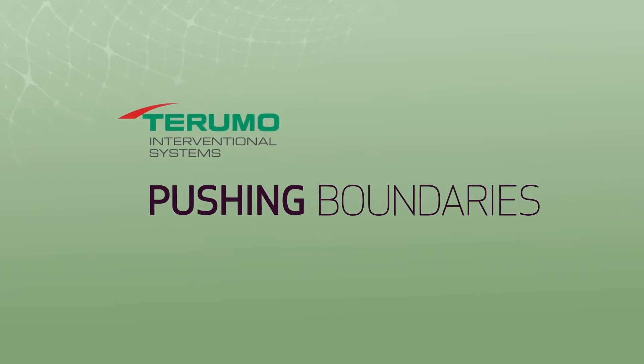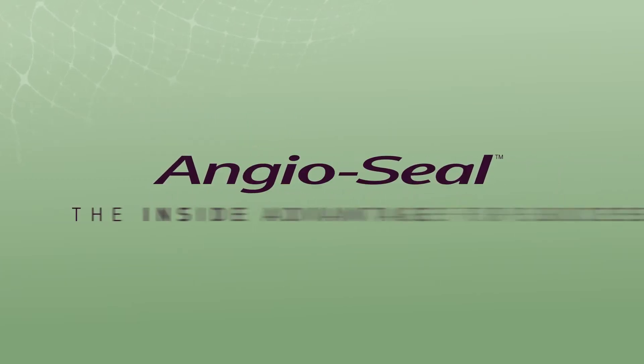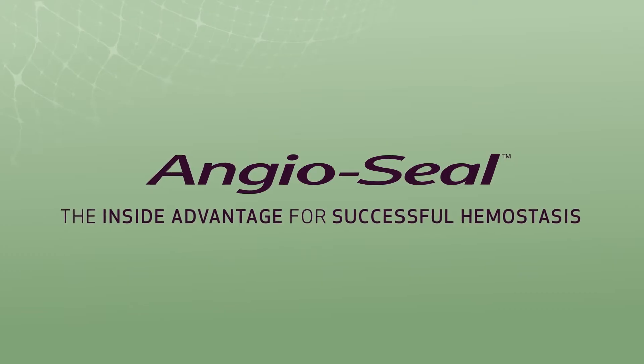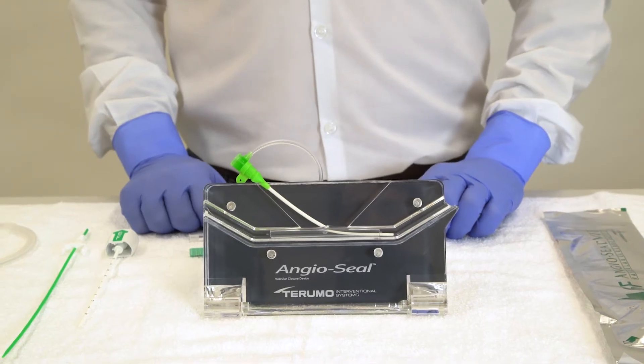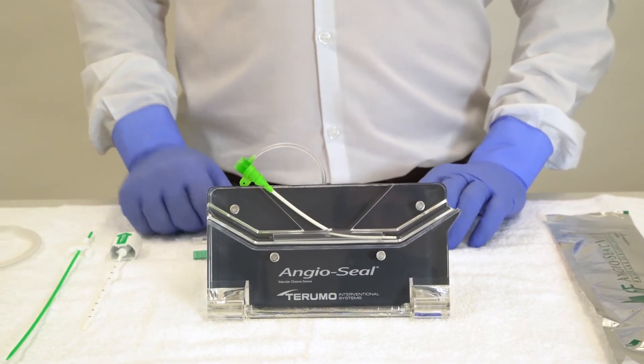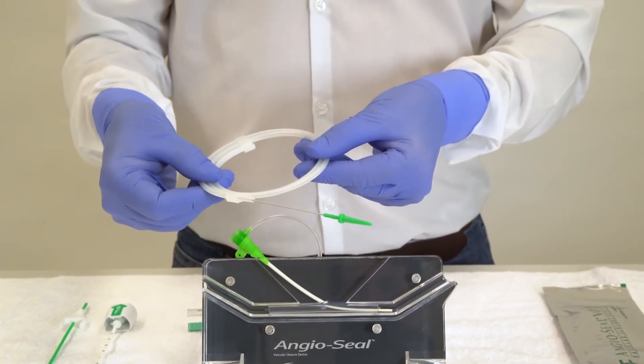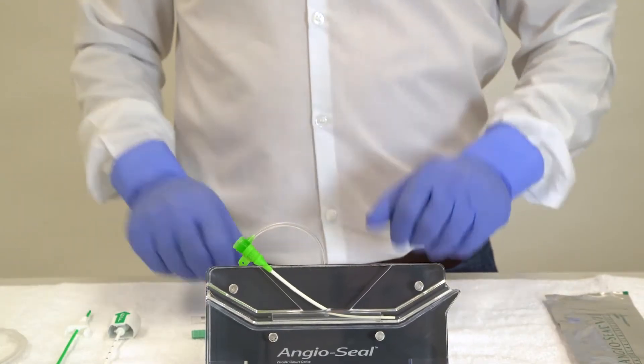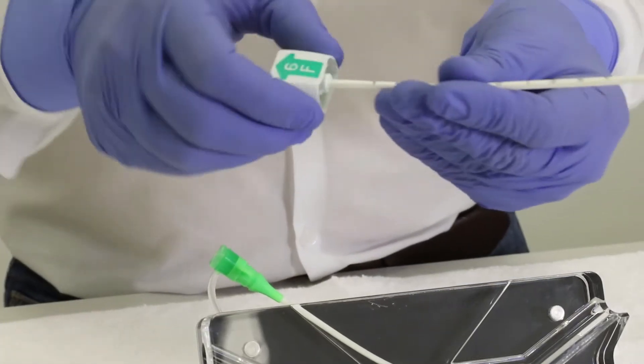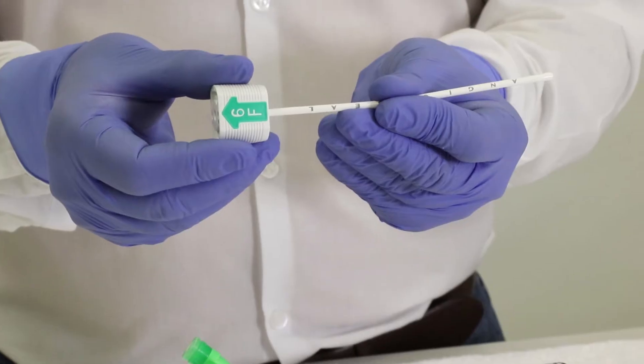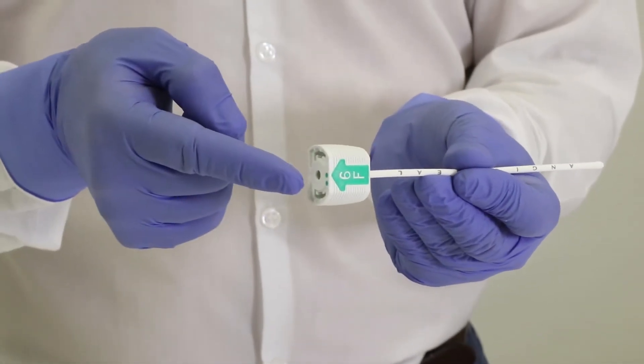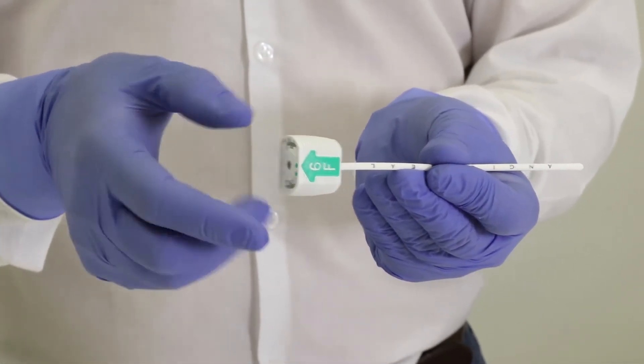In this video we will show the deployment of the Angioseal VIP vascular closure device. These are the accessories that come with the device: a wire, 0.035 for 6 French or 0.038 for 8 French, and a sheath. This is a modified sheath with a hemostatic valve here at the top and a modified tip, a bit longer on one side.